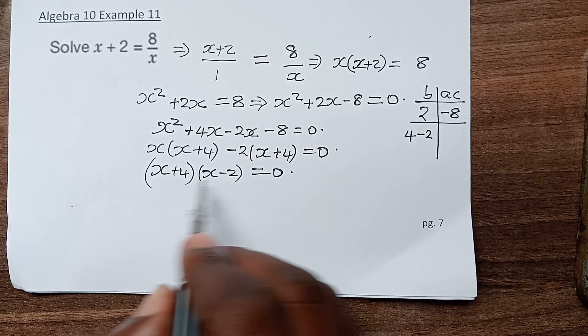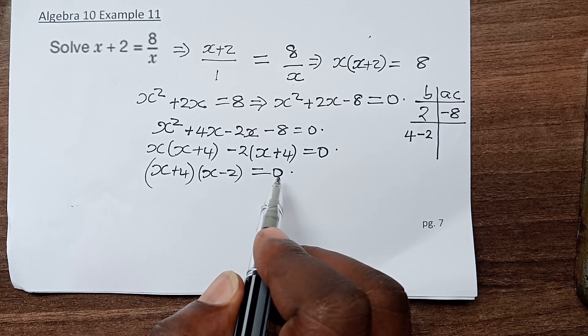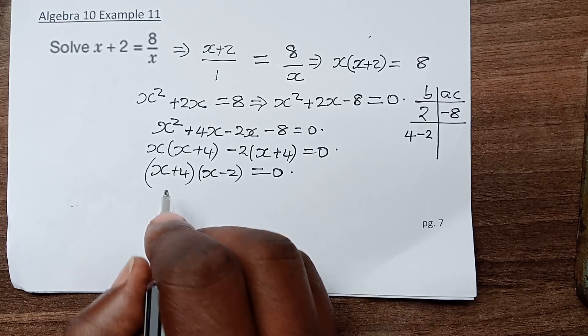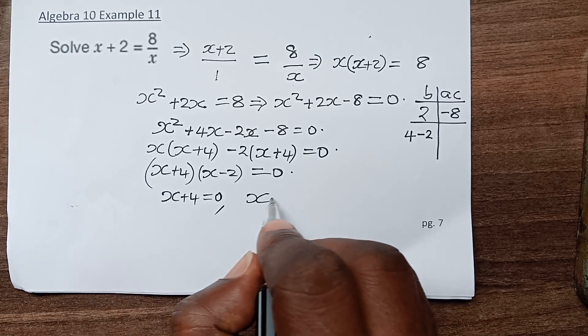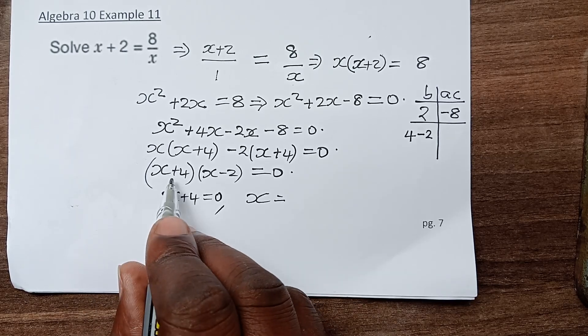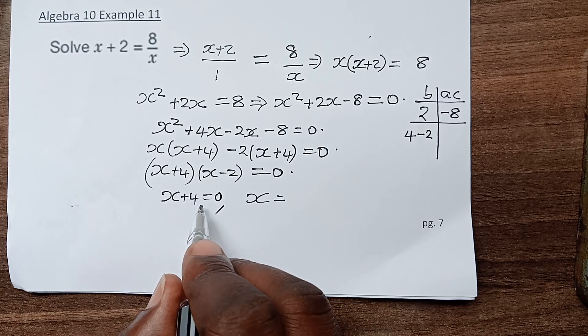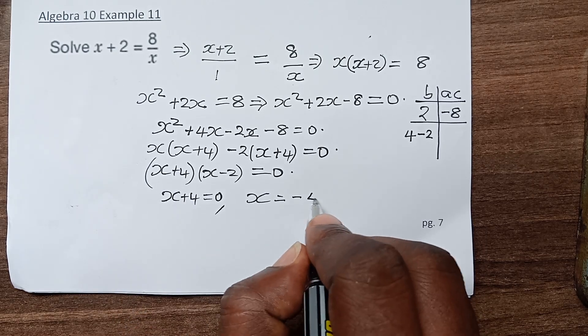We have always said when two numbers multiplied together give a product of 0, it means one of them is 0. If the first bracket equals 0, then x equals negative 4.